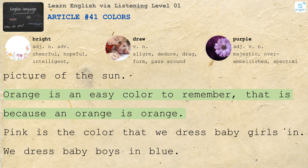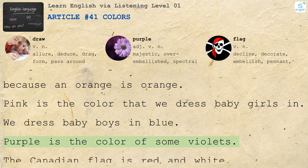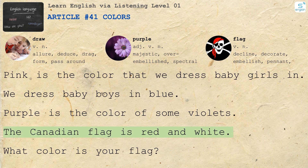Orange is an easy color to remember. That is because an orange is orange. Pink is the color that we dress baby girls in. We dress baby boys in blue. Purple is the color of some violets. The Canadian flag is red and white. What color is your flag?